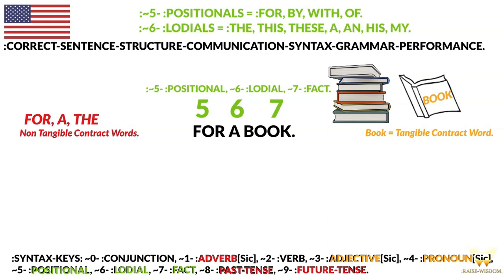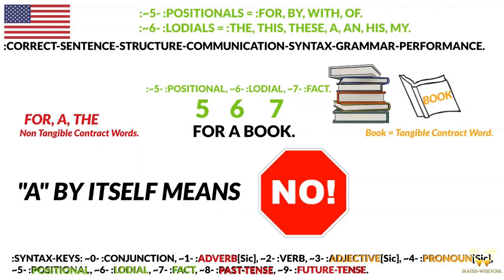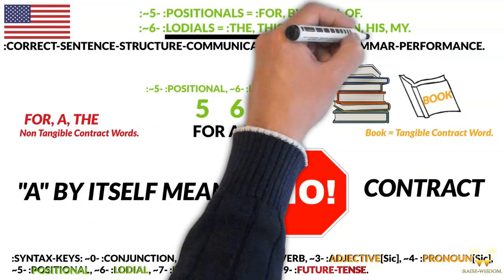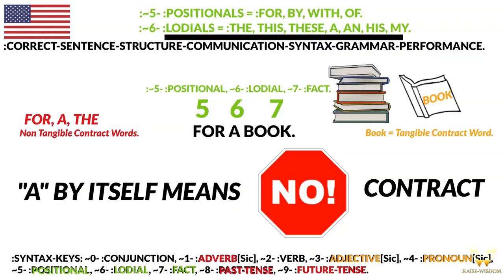That is how you would use an 'A,' which by itself in the fiction babble would be no contract. Here it's given a function and a value as a Lodial. Which book? A book — it could be the book, it could be his book, it could be my book. In this scenario it is a book.